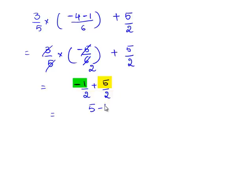Therefore, 5 minus 1 by 2 gives 4 by 2. We know 2 goes in 4 two times. Therefore, the final answer is 2.